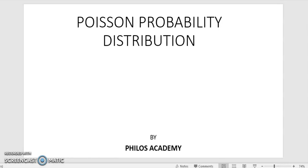Hi, today we will look at Poisson probability distribution. Remember we have discrete probability distribution and continuous probability distribution. It is under the discrete probability distribution that we have the Poisson probability distribution.